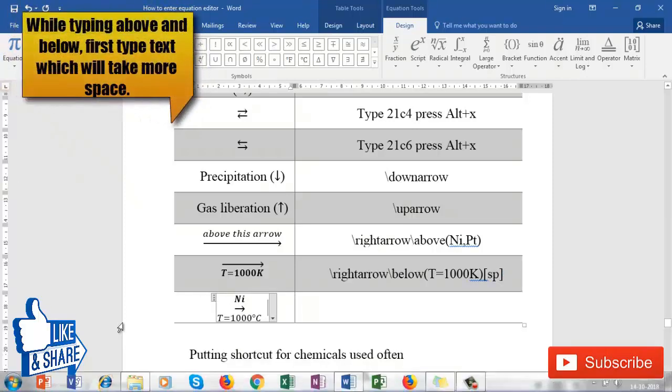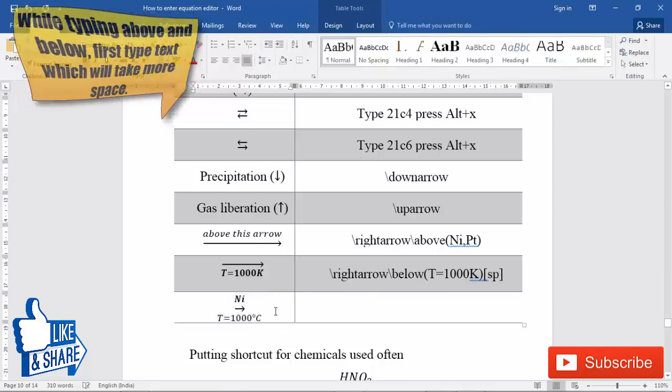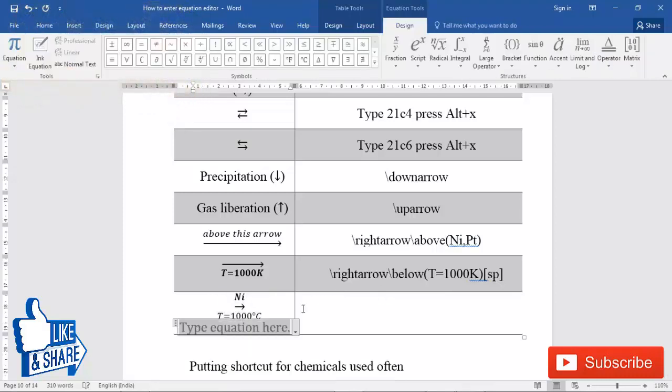This is how you can type. Now you can see that the text below is quite bigger than the text above. So actually this arrow has to be a big one. What you can do is you can just type the first thing which is bigger.